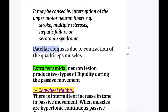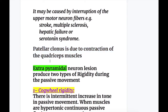Patellar clonus is due to contraction of the quadriceps muscle. So ankle clonus is due to contraction and relaxation of the gastrocnemius muscle, and patellar clonus is due to rhythmic contraction and relaxation of the quadriceps muscle. These two are caused by pyramidal tract lesions.